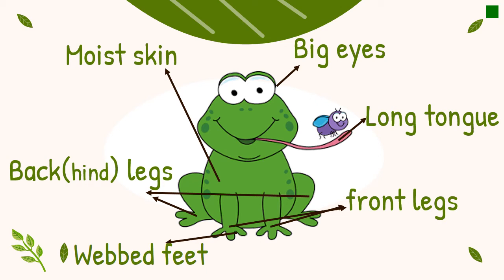Here we have their long tongue — a frog stretches out its long tongue and catches an insect for food. Here are the back or hind legs, and here are the front legs. They have webbed feet that help them swim in water.